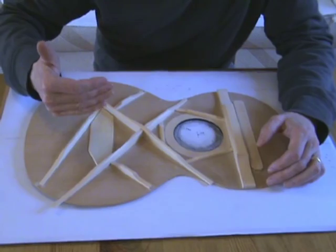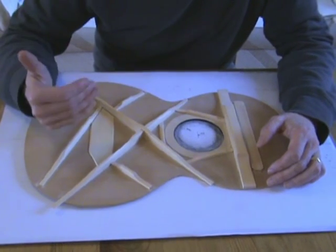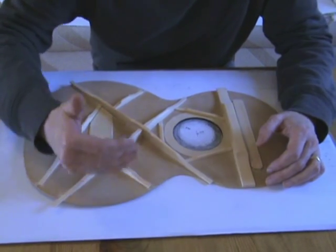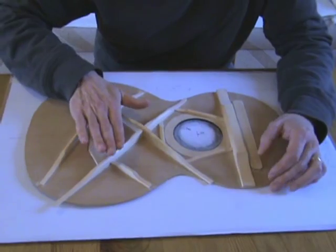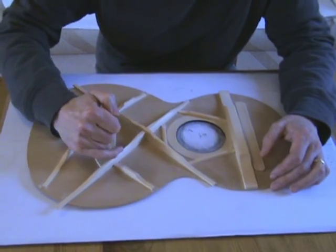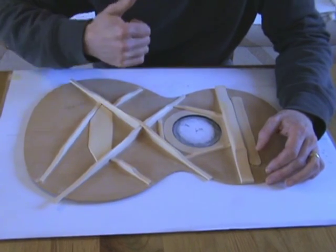Sound travels along the grain of the wood approximately four times faster than it does across the grain of the wood. So in my mind, the X braces, as well as being a structural member, also help to transmit the sound across the whole board.